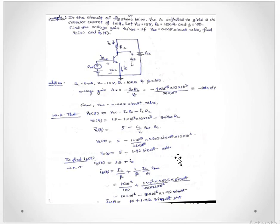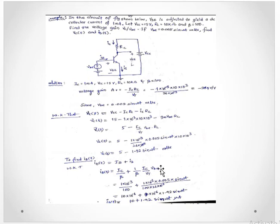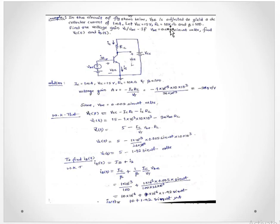To find base current IB(t): IB(t) is given by DC bias current plus signal current. Expressing IB in terms of IC — DC part as IC/β, and signal part as (IC/β·VT)·VBE — substituting values and solving further gives IB(t) = 10 + 1.92 sin(ωt) microampere. So for the given circuit we have calculated voltage gain and base current with input signal amplitude of 5 millivolts.